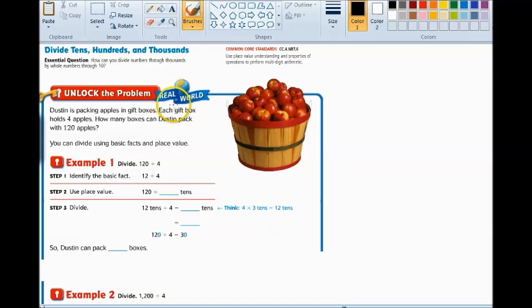So, we'll be solving a simpler problem in division. We're going to be looking at it just with the smaller single-digit numbers, perhaps a couple of two-digit numbers. So, let's look at our unlock the problem here. Dustin is packing apples in gift boxes. Each gift box holds four apples. How many boxes can Dustin pack with 120 apples? I think this is a very real-world problem for some of you, because I know I got some wonderful gifts from Mrs. Jellison and from a lot of you, because you went actually apple-picking this fall.